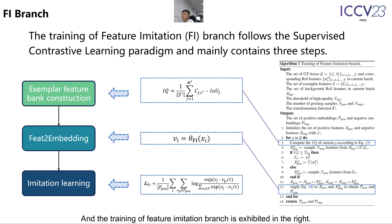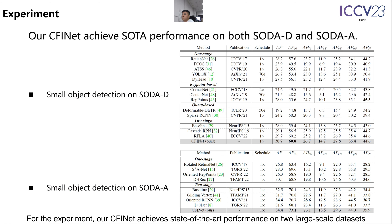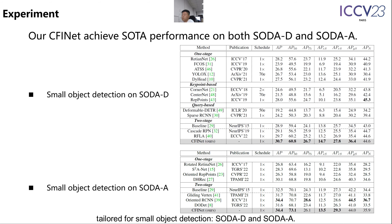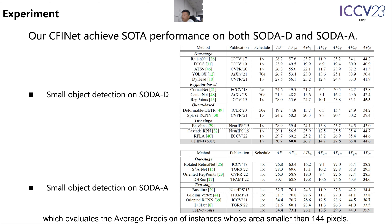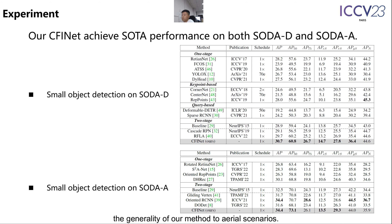The training of the feature imitation branch is exhibited on the right. For the experiments, our CFINet achieves state-of-the-art performance on two large-scale datasets tailored for small object detection: SODA-D and SODA-A. Our method shows a clear predominance especially for the most challenging metric AP_eS, which evaluates the average precision of instances whose area is smaller than 144 pixels. Moreover, SODA-A is a benchmark for oriented object detection, indicating the generality of our method to aerial scenarios.